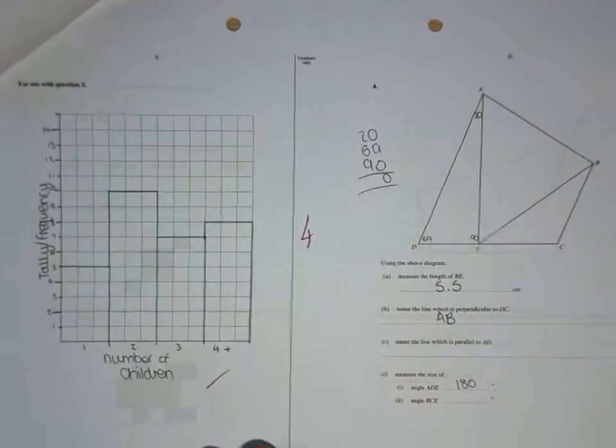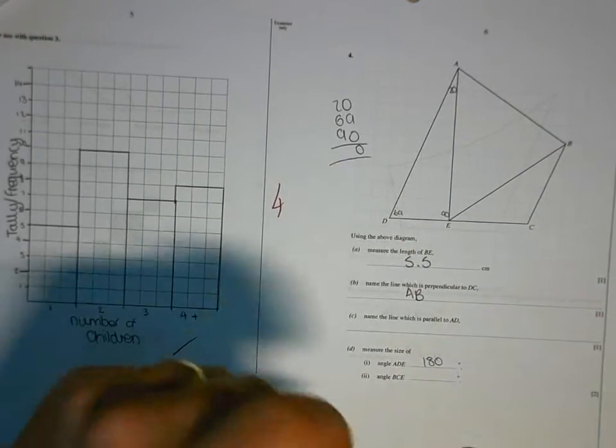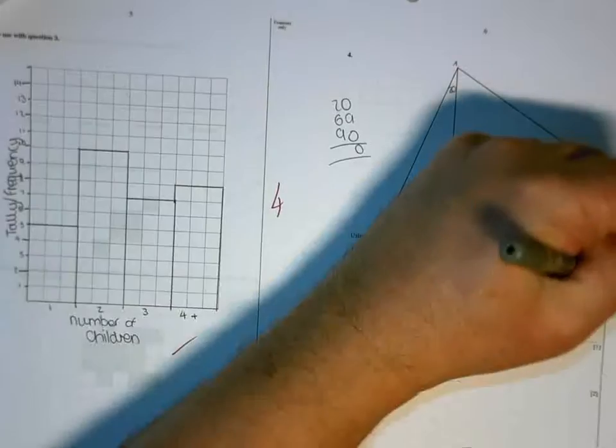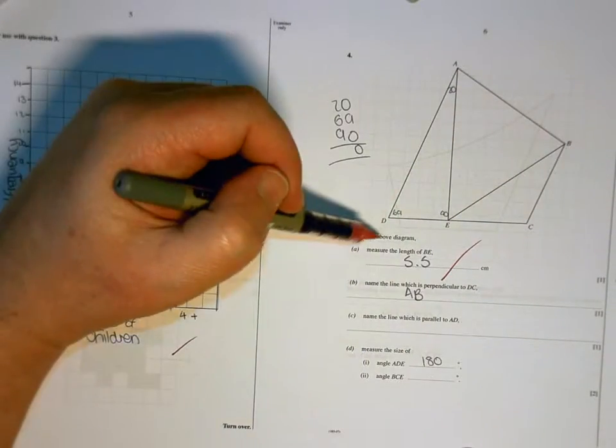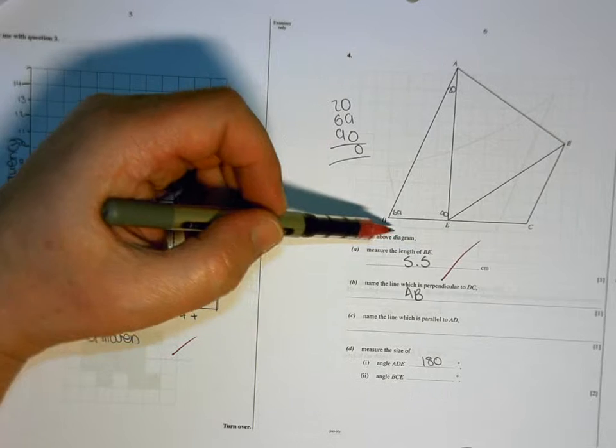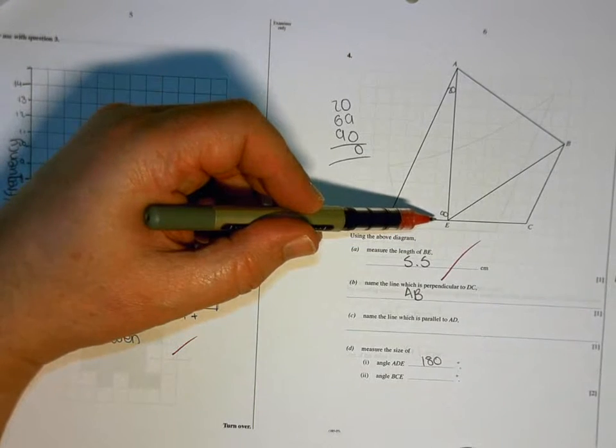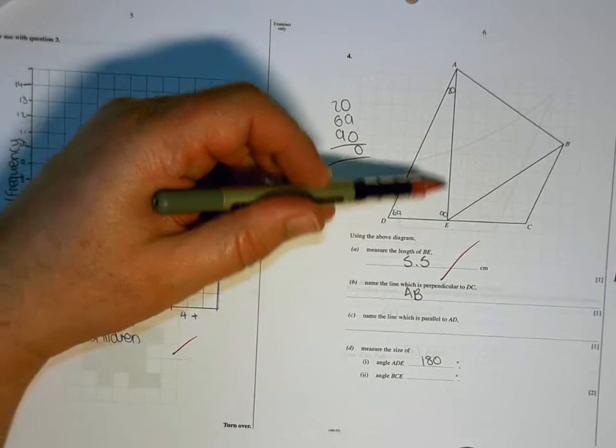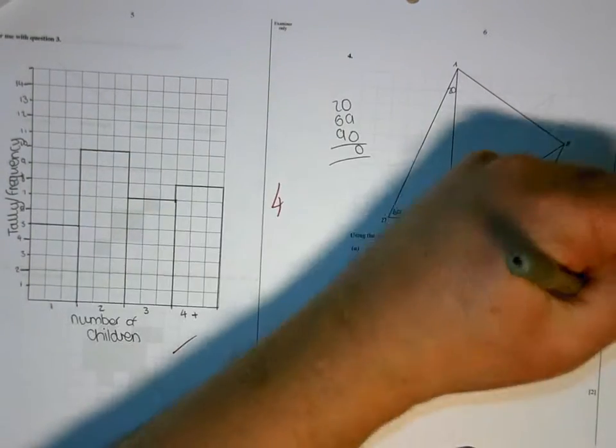And I can't fault that either, so full marks for that, well done. That one is correct, now perpendicular means at right angles, so the line DC is there, you've written that that's 90, so you've identified that that's the right angle. So AE is the line that you're looking for.